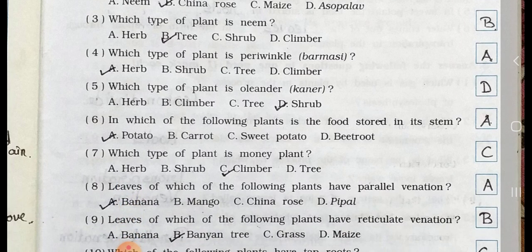Number 4. Which type of plant is a periwinkle (Barmasin)? A. Herb, B. Shrub, C. Tree, and D. Climber. Answer is option A. Herb.